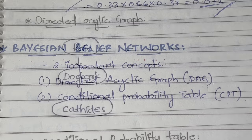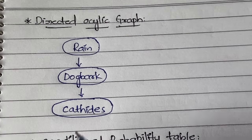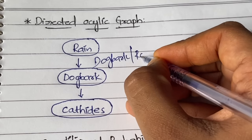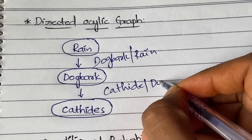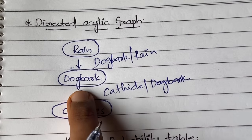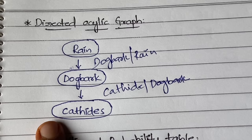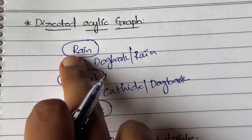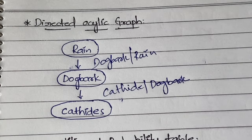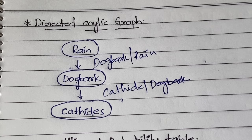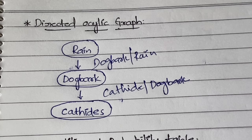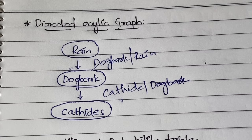In a Directed Acyclic Graph (DAG), we have nodes: Rain, Dog Bark, and Cat Hides. The condition is: when it rains, the dog may bark, and when the dog barks, the cat hides. It's not always the case that when it rains the dog will bark — the dog may or may not bark when it rains, and may even bark when it's not raining. But when the dog is barking, the cat hides because it gets frightened.